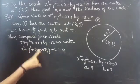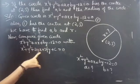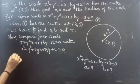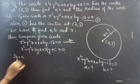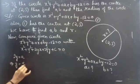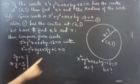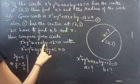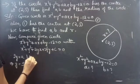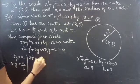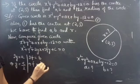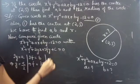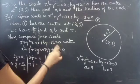Firstly, equate the coefficient of x: we will have 2g = a, from this we get g = a/2. Now equate the coefficient of y: 2f = b, from this we get f = b/2. Now equate the constants: we get c = -12.